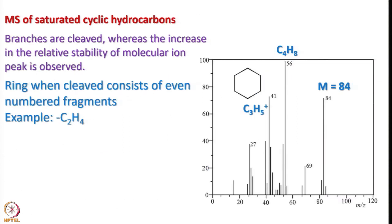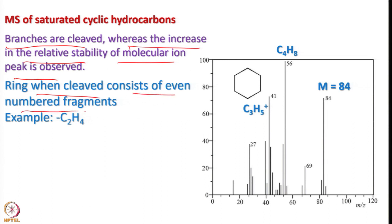Now let us look into saturated cyclic hydrocarbons. The simplest is cyclohexane. Branches are cleaved if present, and there is an increase in the relative stability of molecular ion peaks — more molecular species become stabilized. When the ring is cleaved it consists of an even number of fragments, for example C2H4. The molecular ion peak has molecular weight 84, then we have 56, and then 41 for C3H5+.